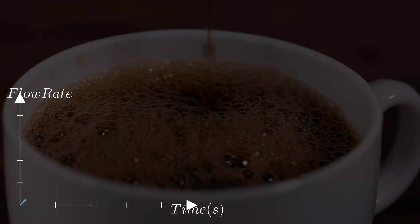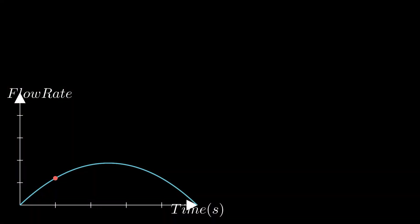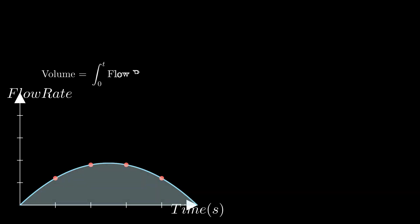As the coffee fills the mug, the flow slows down. This isn't just an observation, it's built into the graph. The curve starts to dip. That's where integration shines. Even as the flow rate changes, we can still capture the total with perfect precision.